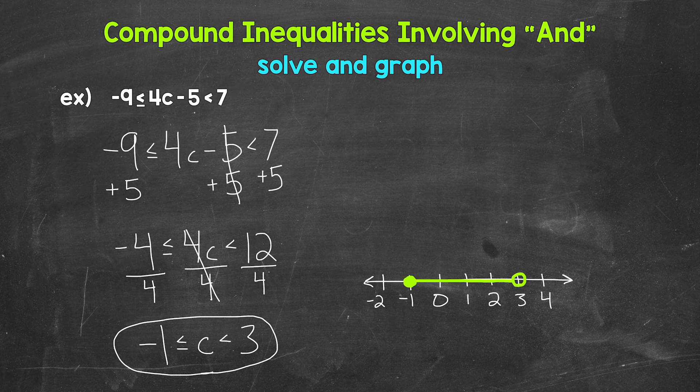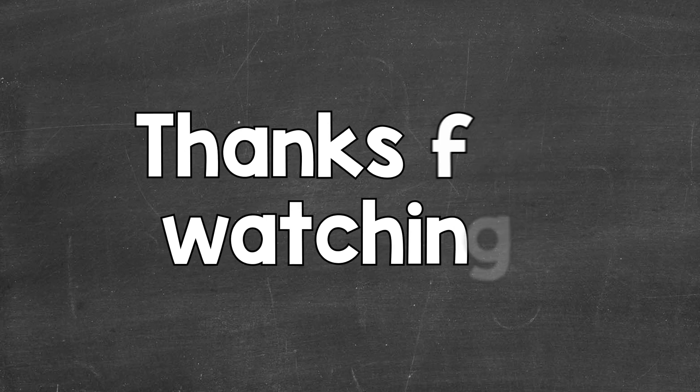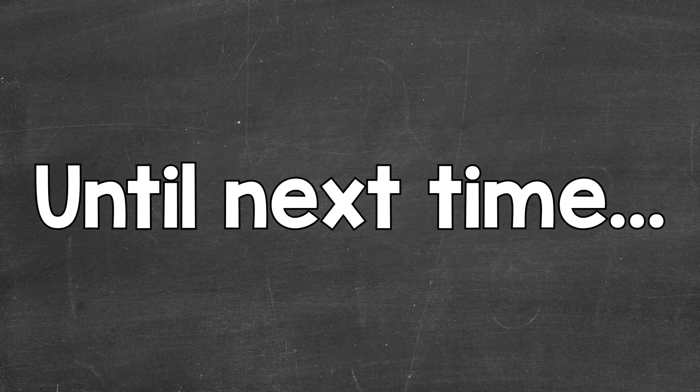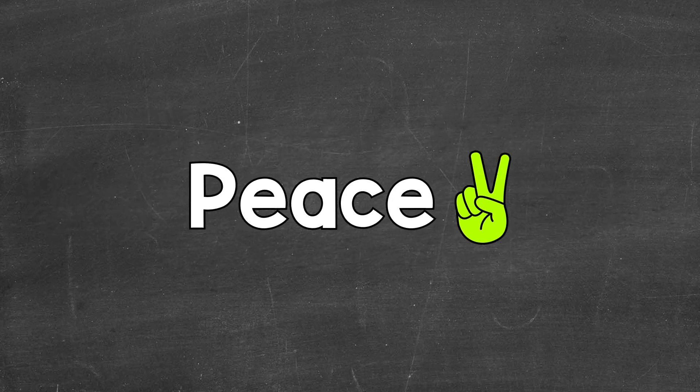And that is C is greater than or equal to negative one and less than three graphed on a number line. So we solved and graphed the compound inequality. There's how to solve and graph compound inequalities involving and — I hope that helped. Thanks so much for watching. Until next time, peace.